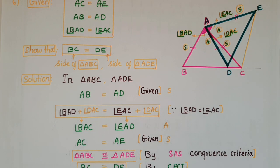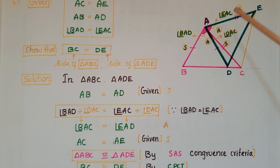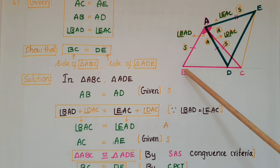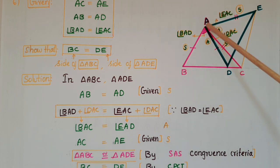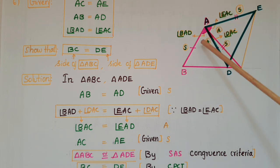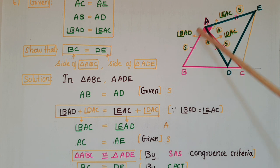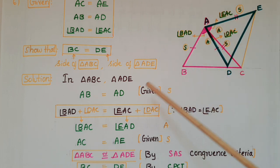Now, in triangle ABC and triangle ADE: AB is equal to AD. This is a side of triangle ABC and this is a side of triangle ADE. This is given.